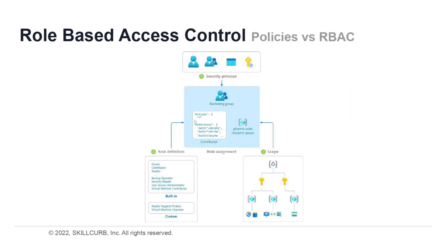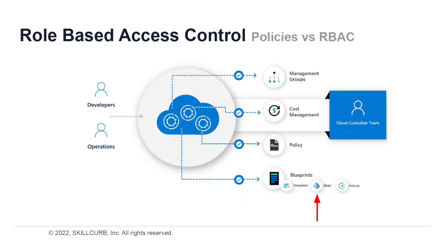Access management for cloud resources is a critical function for any organization using the cloud. Azure Role-Based Access Control, or RBAC, helps you manage who has access to Azure resources, what they can do with those resources, and what areas they have access to. Azure RBAC is an authorization system built on Azure Resource Manager that provides fine-grained access management. Azure Policy evaluates state by examining properties on resources represented in Resource Manager, ensuring that resource state is compliant to your business rules without concern for who made the change or who has permission to make a change.